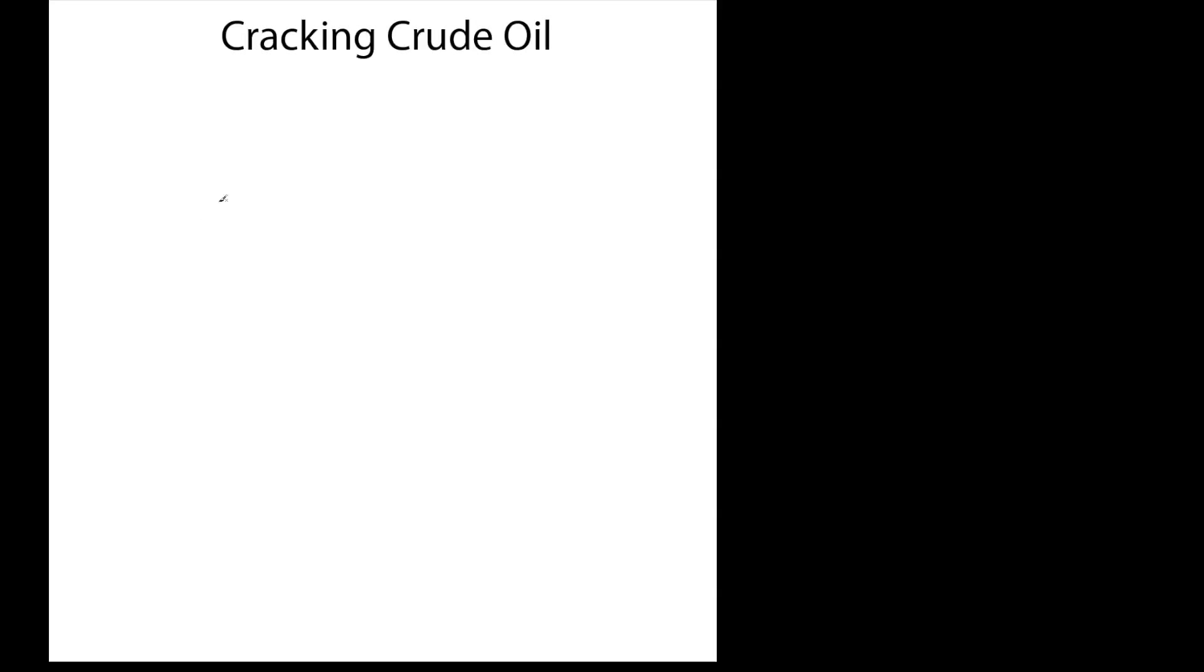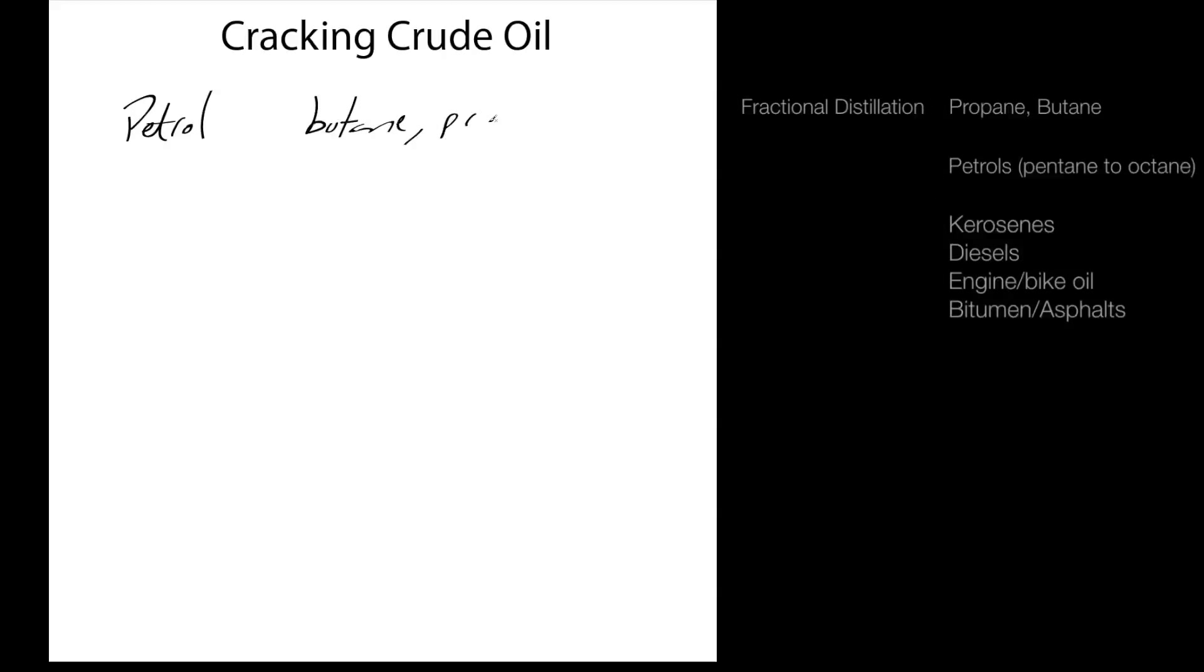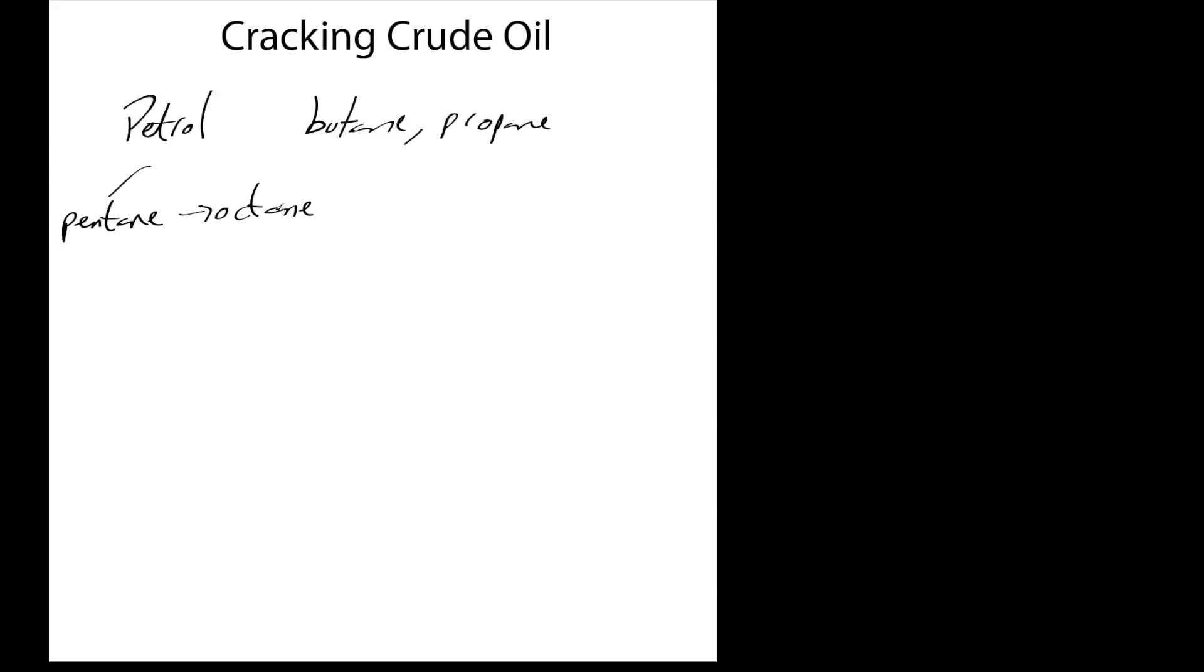The components included things like butane, propane gases, and petrol, which comes from pentane up to octane. So petrol is one category, then we have kerosene, and so on.